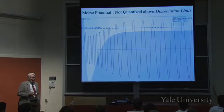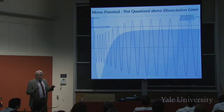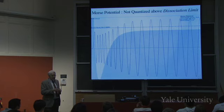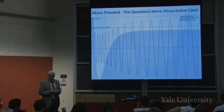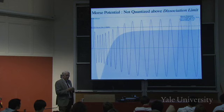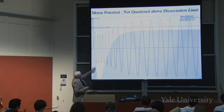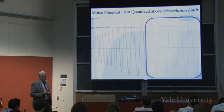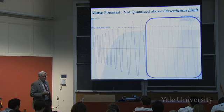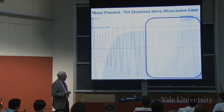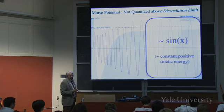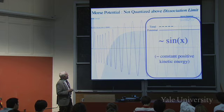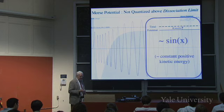With energy above the Morse dissociation limit, the wave function is no longer bounded — it goes out to infinity — because you have enough energy to break the bond and the particle keeps going. Inside it looks like the bound case, but outside on the right it's a sine wave, because the potential is effectively constant and below the total energy, giving a constant positive kinetic energy.